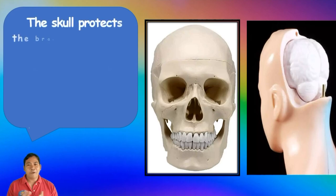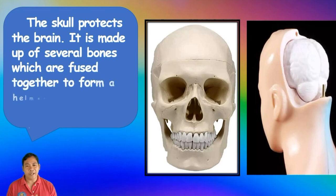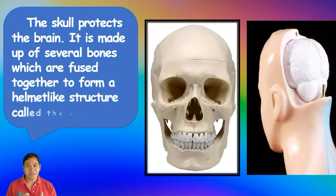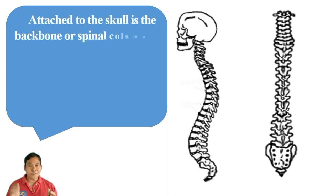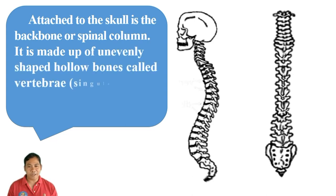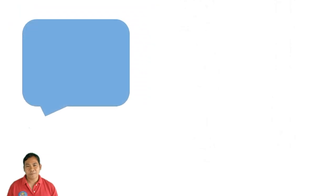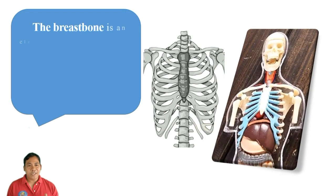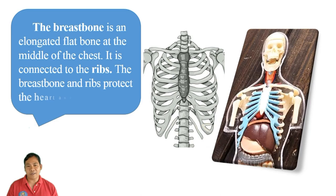The skull protects the brain and is made up of several bones fused together to form a helmet-like structure called the cranium. Attached to the skull is the backbone, or spinal column, made up of evenly shaped hollow bones called vertebrae, stacked on top of each other. The breast bone is an elongated flat bone at the middle of the chest connected to the ribs. The breast bone and ribs protect the heart and lungs.